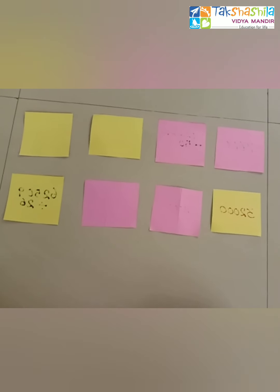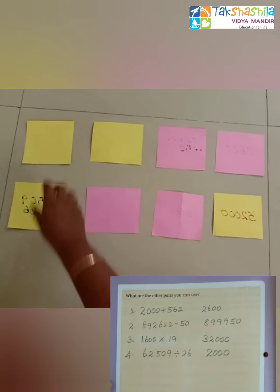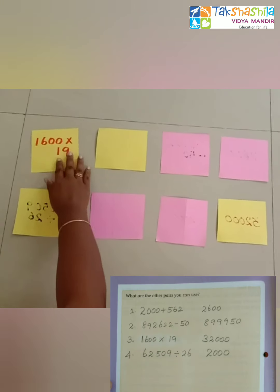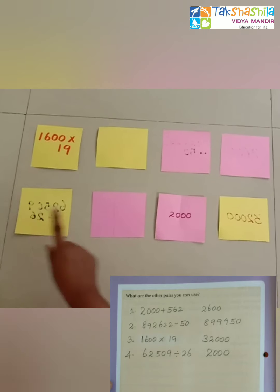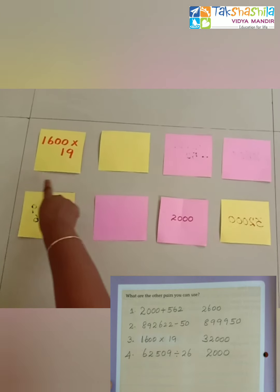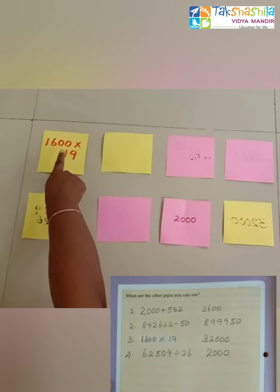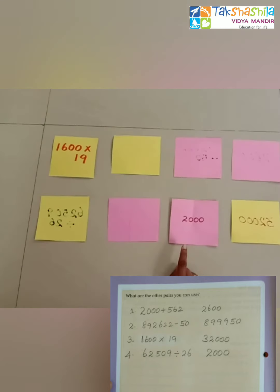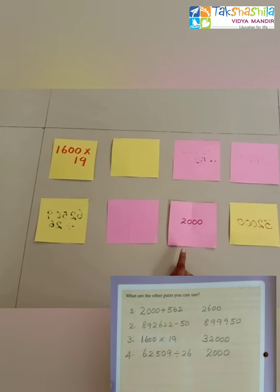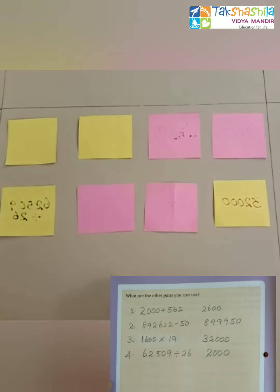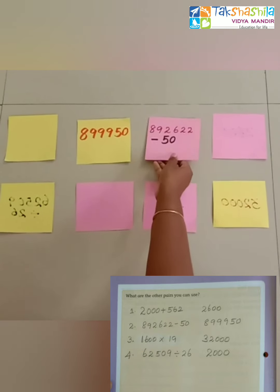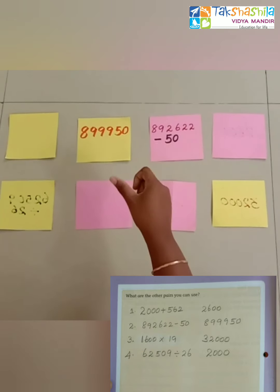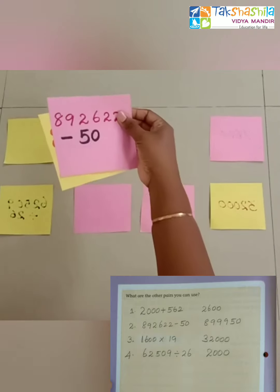Now I'm going to open the first card. It is 1600 into 19. My second card is 2000. See, 1600 into 19 does not match with 2000, so the cards are wrong. It is unpaired. Now I'm going to close the card back. So now I'm going to open the second pair. See the cards—the cards are matching! Yes, we found out the correct pair.